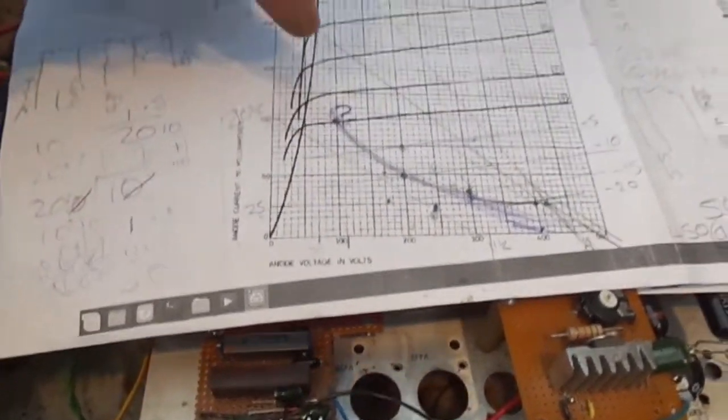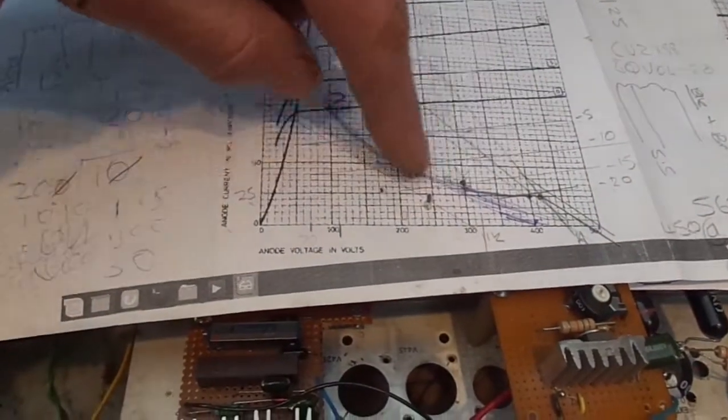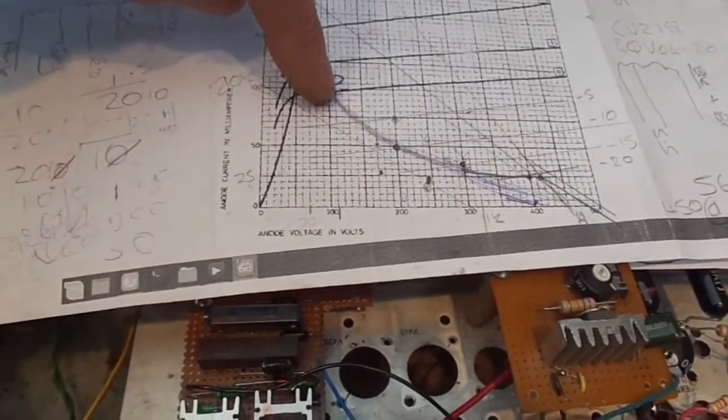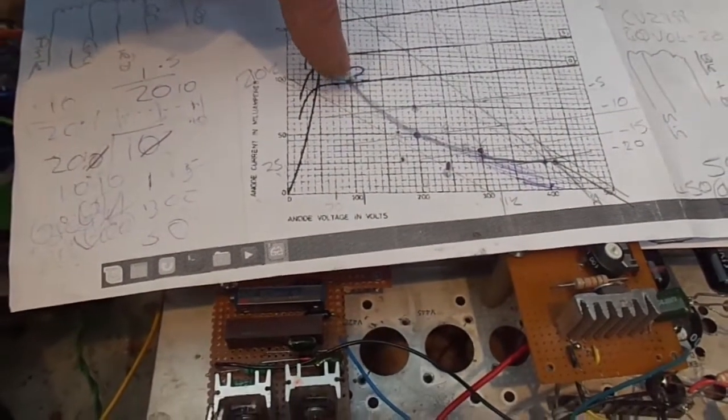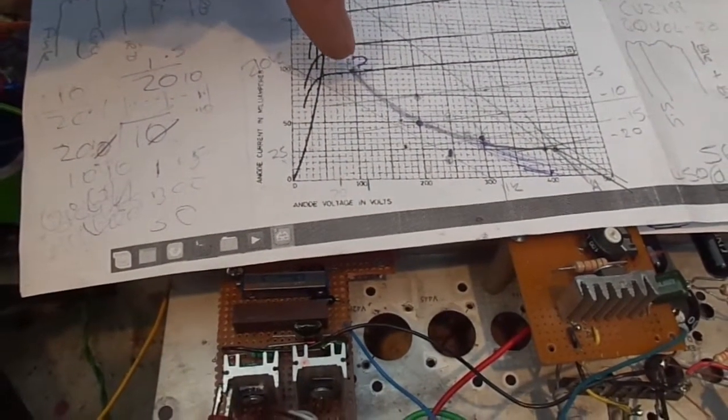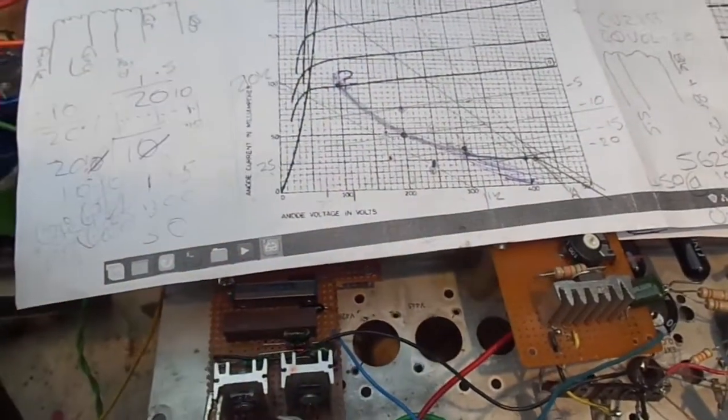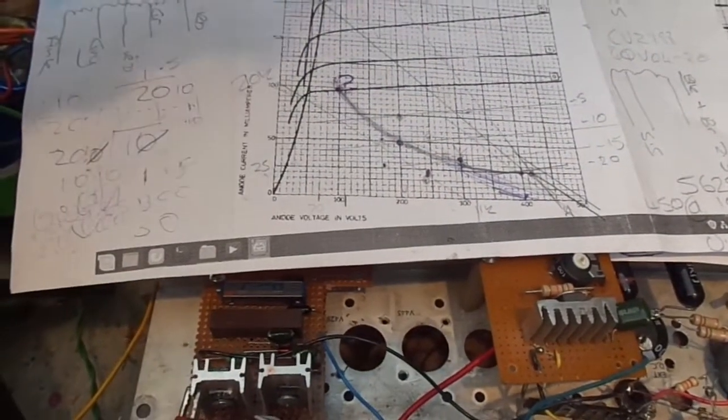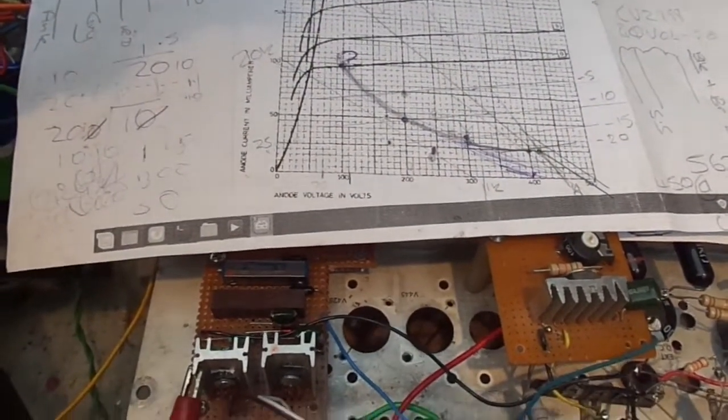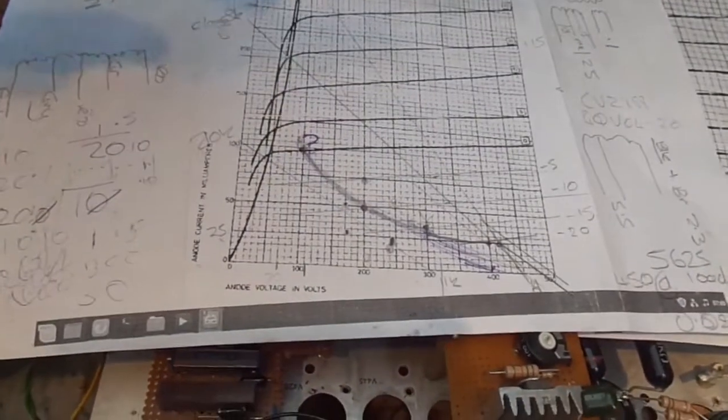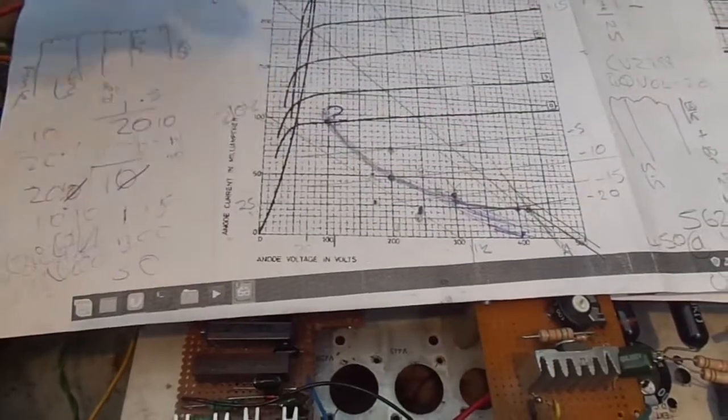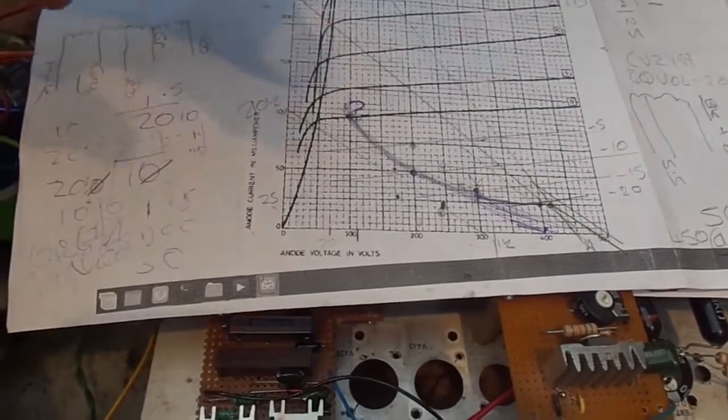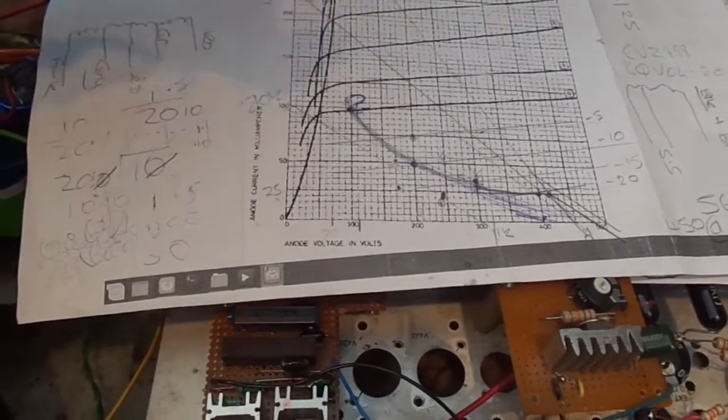Now then, when I drew this the other day I didn't take into consideration the maximum power dissipation. See this horrible line there, that's a maximum dissipation of 10 watts per anode. So basically in parallel they should be capable of 20 watts. Now then, I'm no expert on designing amplifiers as you probably know. I'm getting a bit stuck here.